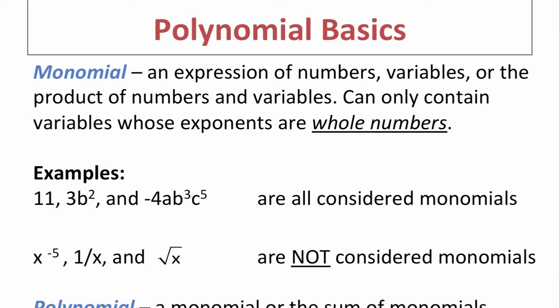First we have monomial. A monomial is an expression of numbers, variables, or the product of numbers and variables. Remember the word product means to multiply, so the only operation between your numeric values and your variables should be multiplication. The other detail is that we can only have whole numbers as exponents on our variables.